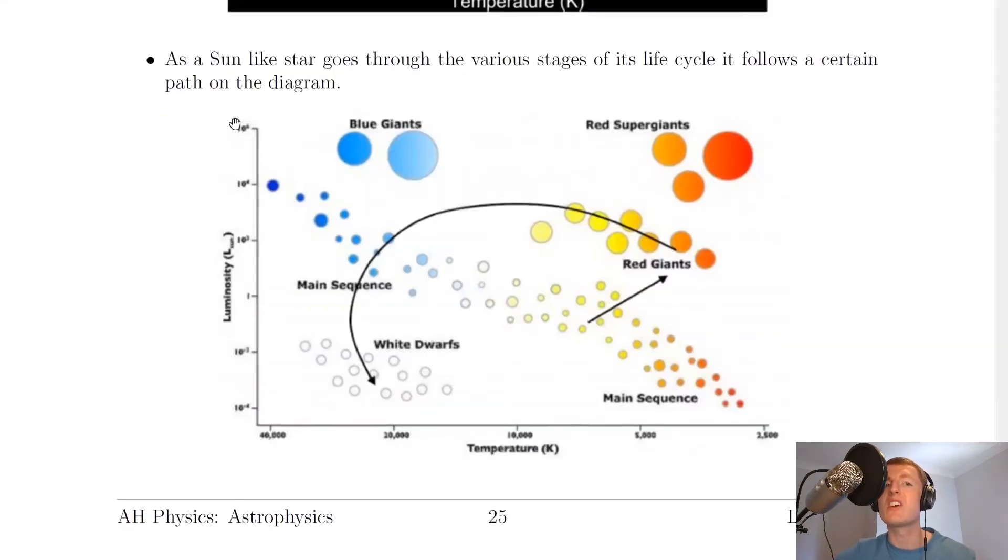Going back to the notes now, it says here that as a sun-like star goes through the various stages of its life cycle, it follows a certain path on the diagram. You can hopefully see that all stars will exist to begin with on the main sequence. And then once they've been on the main sequence, they can become a red giant or a red supergiant. And then they're going to follow the path to becoming a white dwarf.